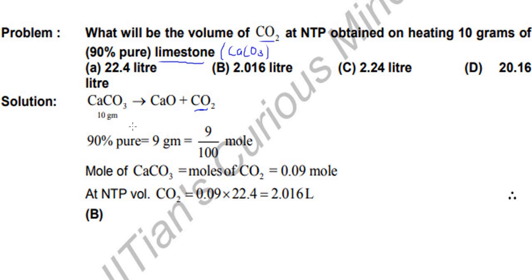Since this is 10 grams and 90% pure, we consider only the pure calcium carbonate. So 90% of 10 grams is 9 grams, and 9 grams is 0.09 moles. Moles equals weight divided by molecular weight, and the molecular weight of calcium carbonate is 100.